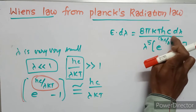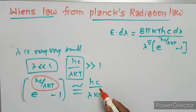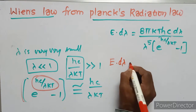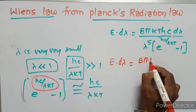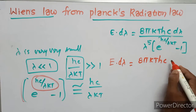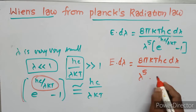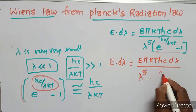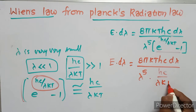Substituting this approximation into Planck's law, E·d_lambda equals 8·pi·kT·hc·d_lambda divided by lambda to the power of 5, multiplied by hc/(lambda·kT).